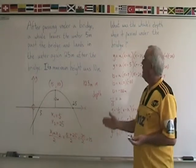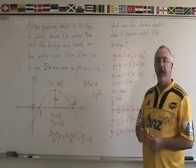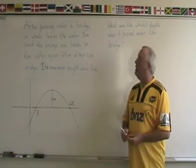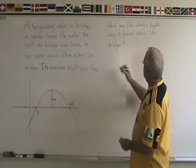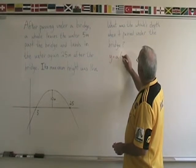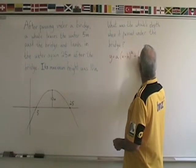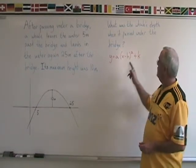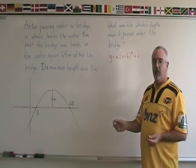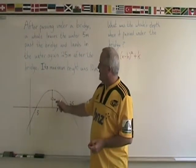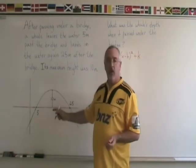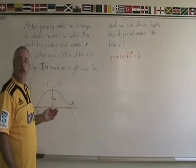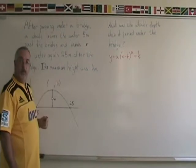There is another way of solving this problem using a different form for the equation, and that's what we will look at next. The other method uses the form y equals a times (x minus h) squared plus k. To derive the equation this way, we need to know the vertex, which gives us our h and k, and one other point. The vertex has a y-coordinate of 10, but we have to figure out its x-coordinate.